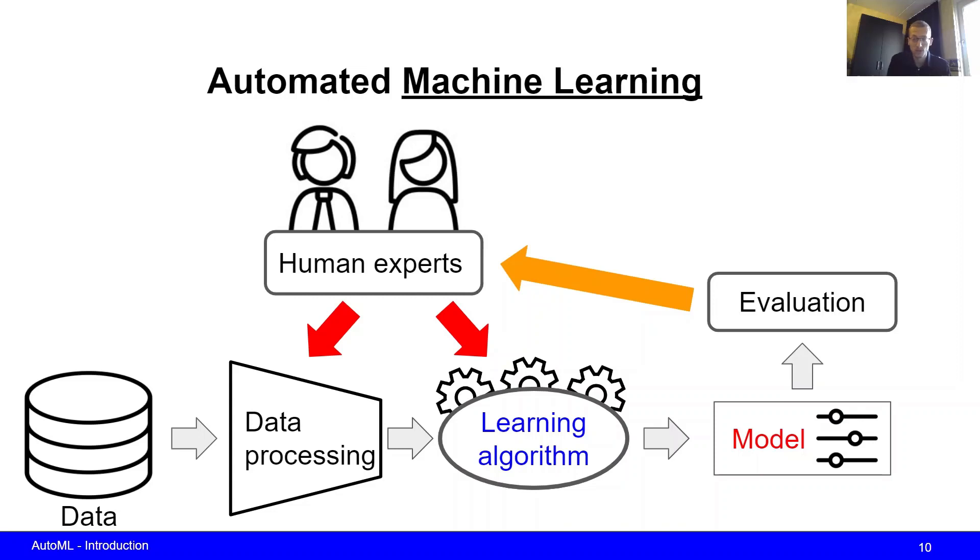The humans observe the performance of the model and then what they usually do is a lot of trial and error. Maybe they're not directly happy with the initial performance and they want to try to squeeze out some more performance by either changing the data preprocessing methods or maybe the learning algorithm and the corresponding hyperparameters. While this looks pretty simple, there are a few subtle things that I would like to stress in this figure.